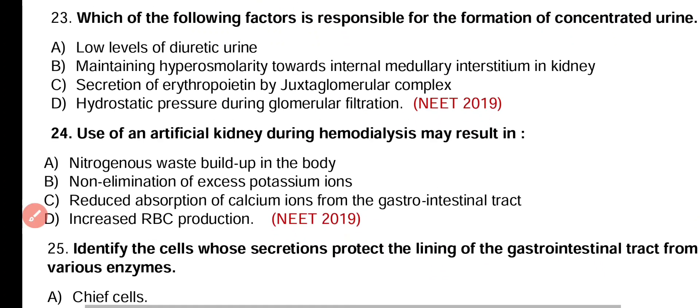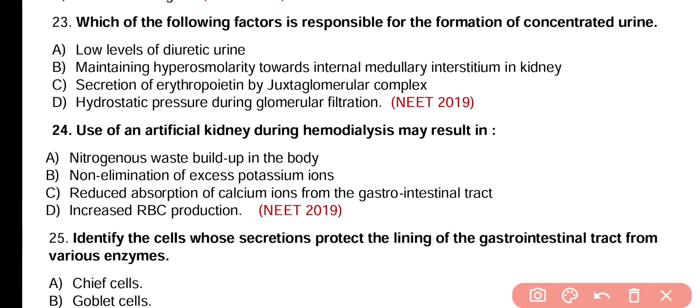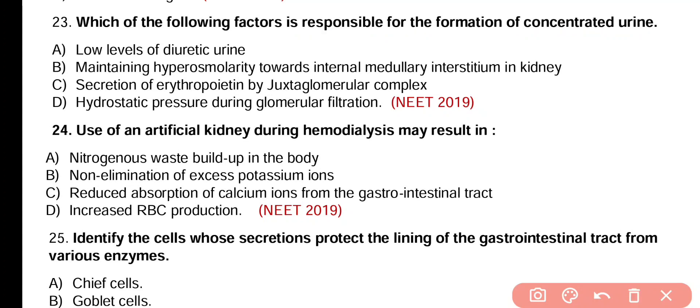Question number 23. Which of the following factors is responsible for the formation of concentrated urine? Low level of diuretic urine, maintaining hyperosmolarity towards the internal medullary interstitium in the kidney, secretion of erythropoietin by juxtaglomerular complex, or hydrostatic pressure during glomerular filtration? Correct answer is option B. Hyperosmolarity of the internal medullary interstitium in the kidney leads to concentrated urine production.